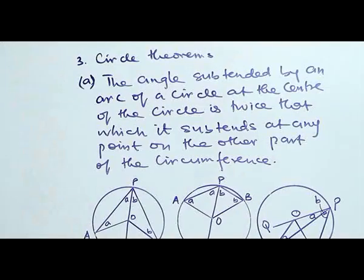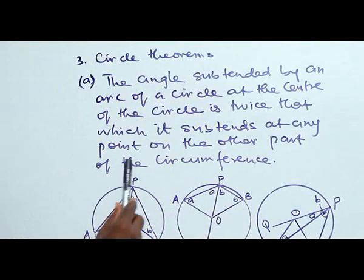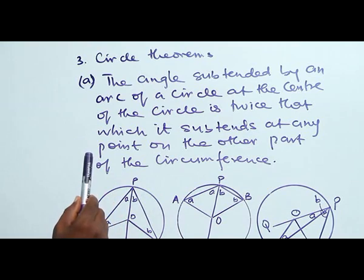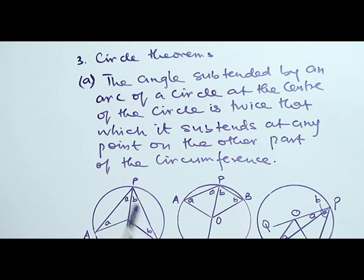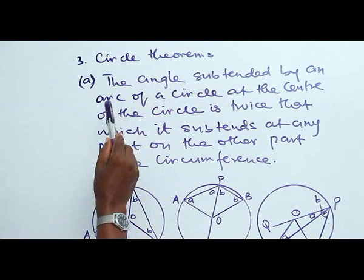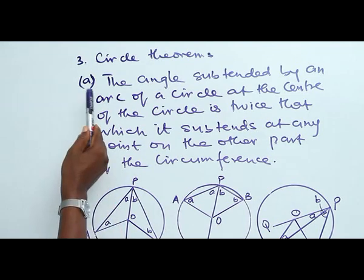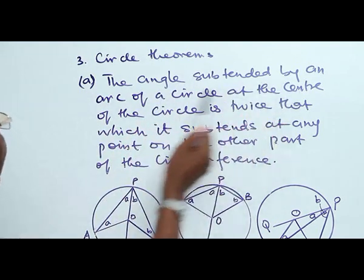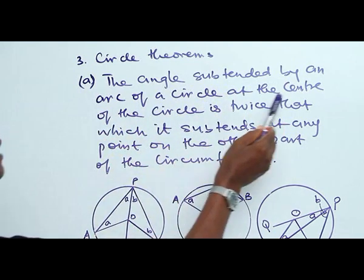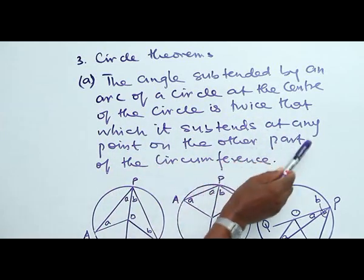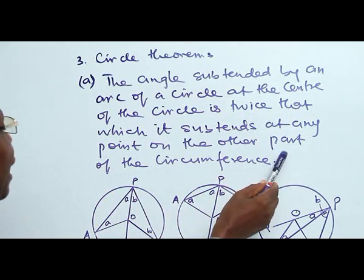Now we are looking at circle theorems. The first theorem we treated was on the chord — the line from the center to a chord bisects the chord and is perpendicular to the chord. But now we are looking at more theorems. The first one is: the angle subtended by an arc of the circle at the center of the circle is twice that which is subtended at any point on the other part of the circumference.